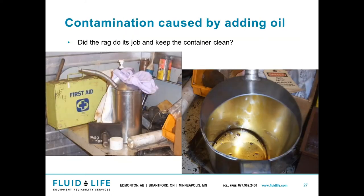This oil transfer container was sealed with a rag, and as you can see that didn't really do its job. A couple of things going on — this is another zinc-coated galvanized container, so again the ZDDP additive issue can arise. And there's all this junk in the bottom. We were talking about how 40 micron is the smallest a human can see — about the size of the cross section of a piece of human hair. There's a lot more there that you can't see. So what is going into that oil that you can't see?